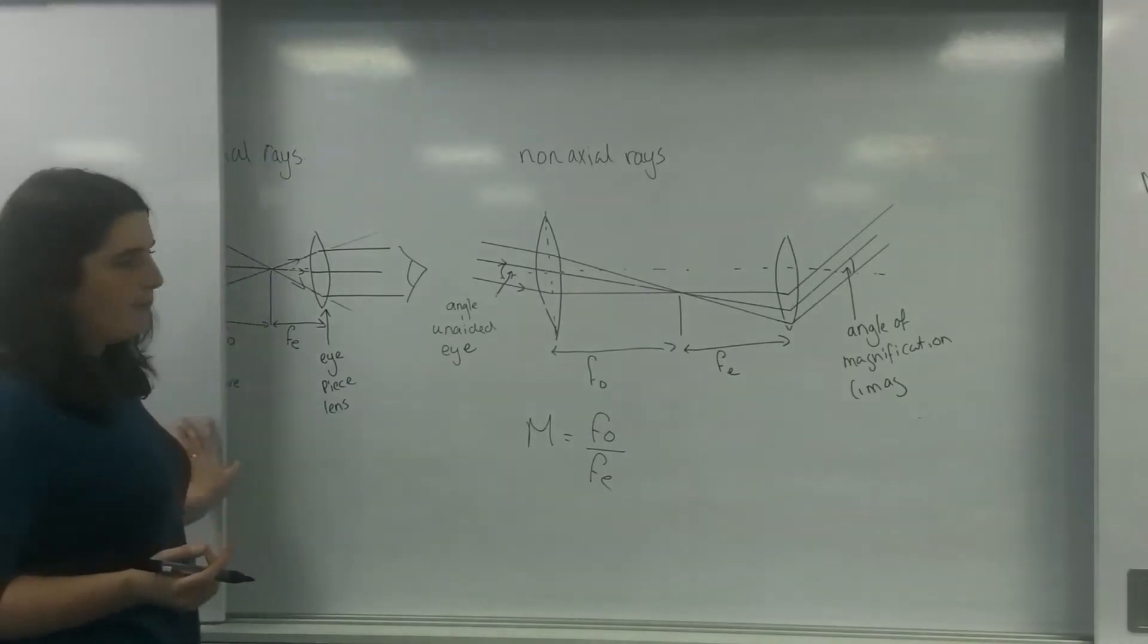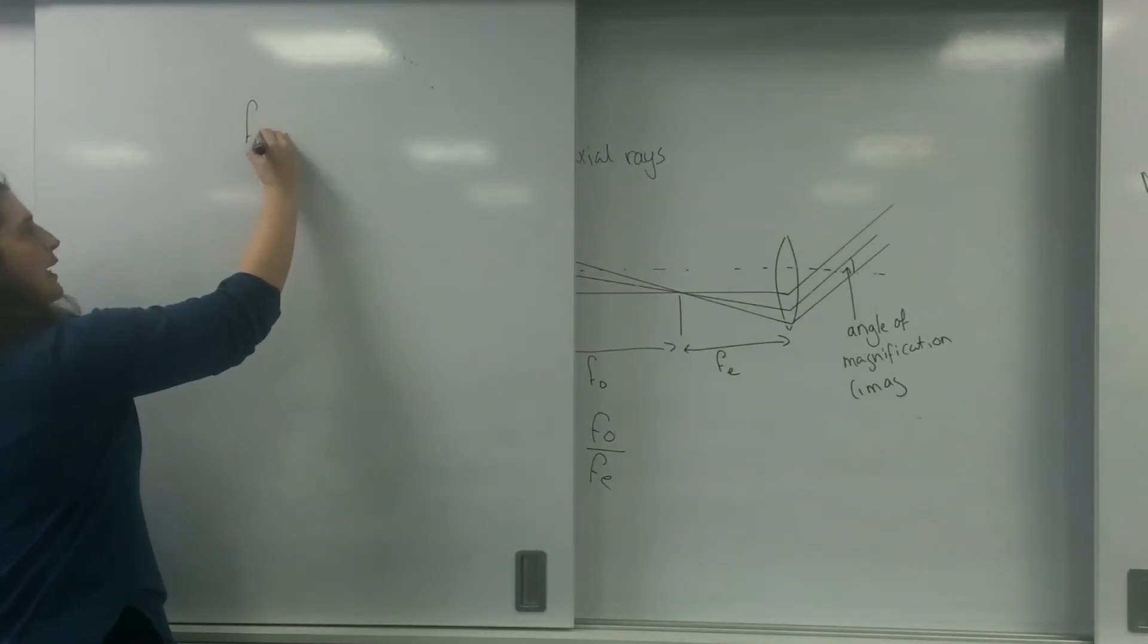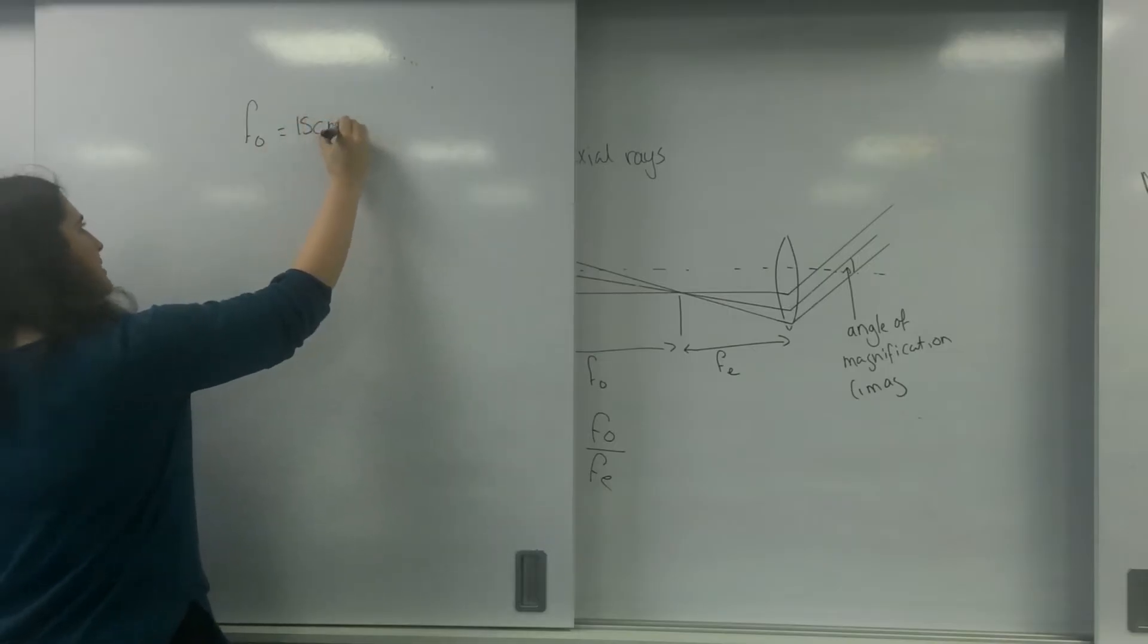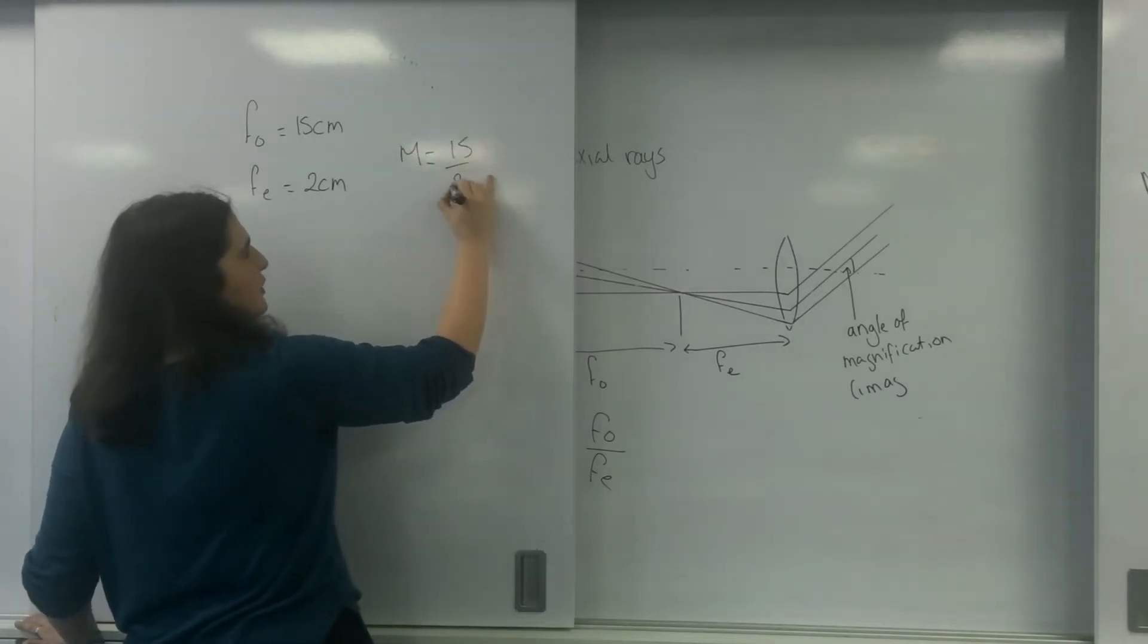So let's do an example. For example, let's say I have a focal length of 15 centimeters and an FE of 2 centimeters, my magnification will be 15 over 2, which is going to be 7.5 times.